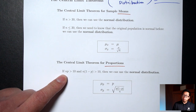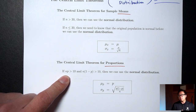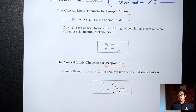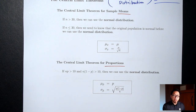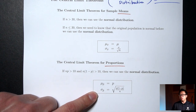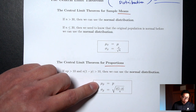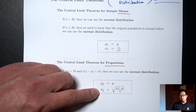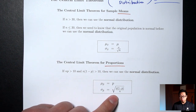Here, n is the sample size and p is the population proportion. If those two conditions are met, your sample size is big enough and you can use the normal distribution. The mean you should use is the population proportion p. The standard deviation you should use is the big square root formula: square root of p times (1 minus p) over n.